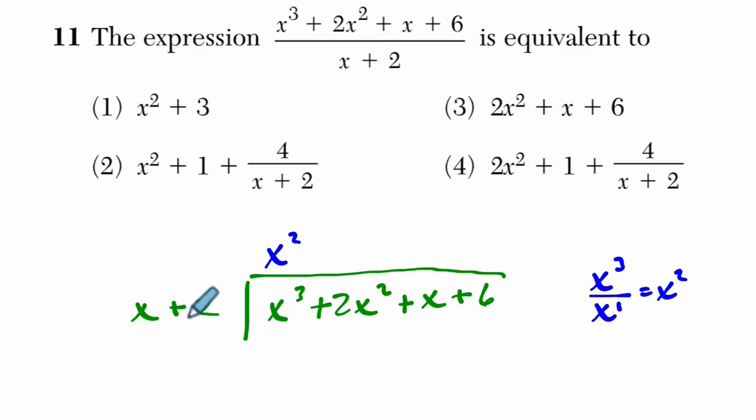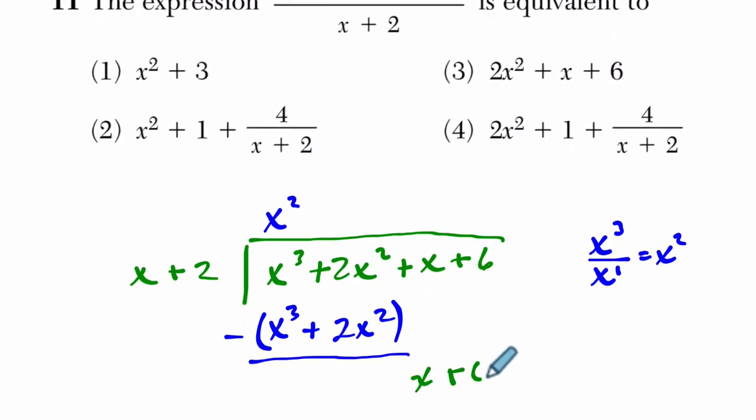And you only really need to compare those leading terms, because now when you distribute x squared to both x and 2, what do you get? You get x cubed plus 2x squared. You're finding out what the product has gotten you so far, and you could subtract to find out what's left. In this case, these both cancel out, and what's left is x plus 6.